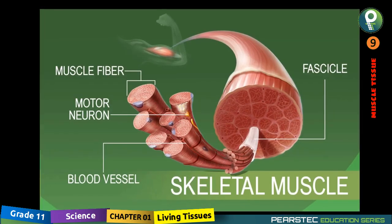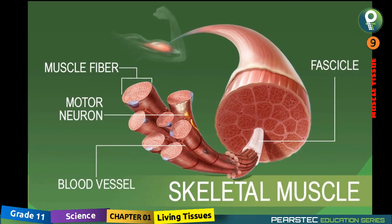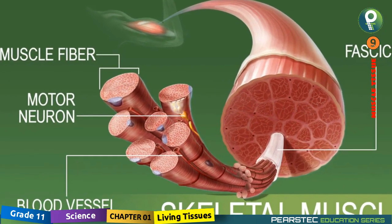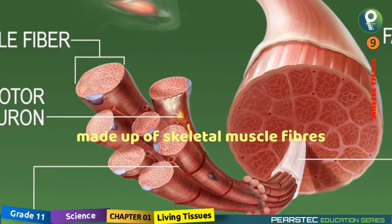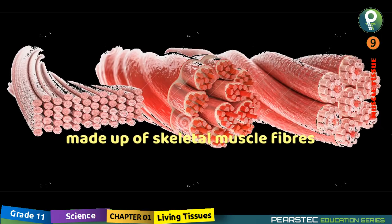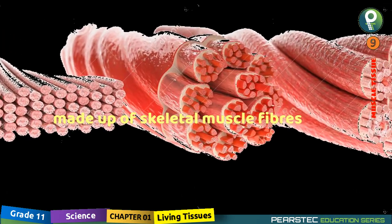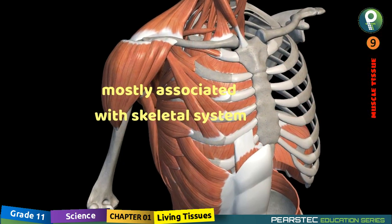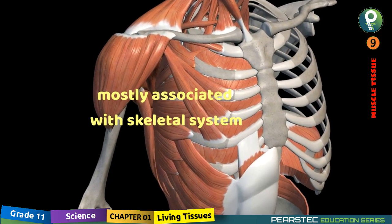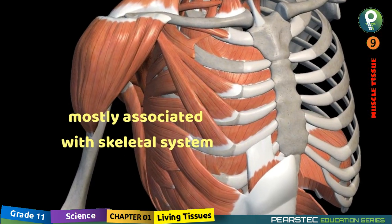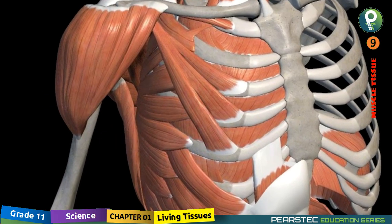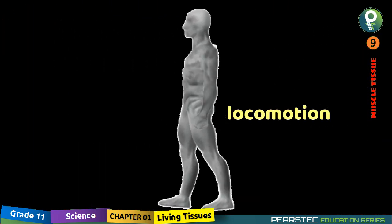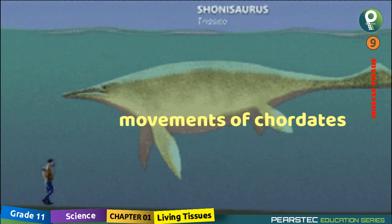Now let's understand the skeletal muscle tissues. Skeletal muscle tissue is made up of skeletal muscle fibers. These are mostly associated with the skeletal system, and skeletal muscles help in locomotion and movement.